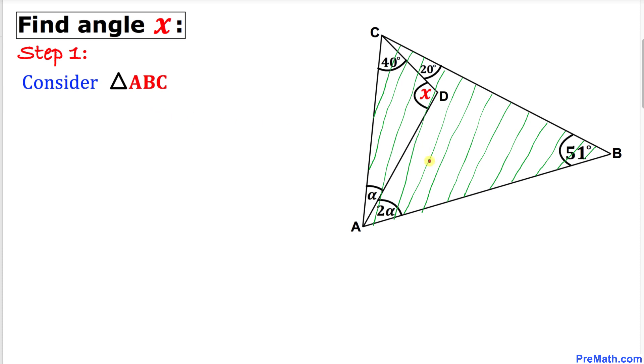Let's focus on this big triangle ABC. This whole angle A is going to be the sum of these two individual angles, so that is alpha plus 2 alpha, which makes 3 alpha. Likewise, this angle is going to be 20 plus 40, which becomes 60 degrees.